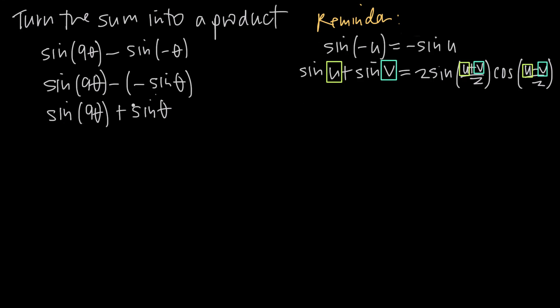We're going to say, first, that we're going to call this u. So u is going to be 9θ, and v is going to be θ. Now, if we take the right-hand side, we can call sine of 9θ plus sine of θ: 2 sine of (u + v)/2. So 9θ plus θ all divided by 2, multiplied by cosine of u minus v. So 9θ minus θ all divided by 2.